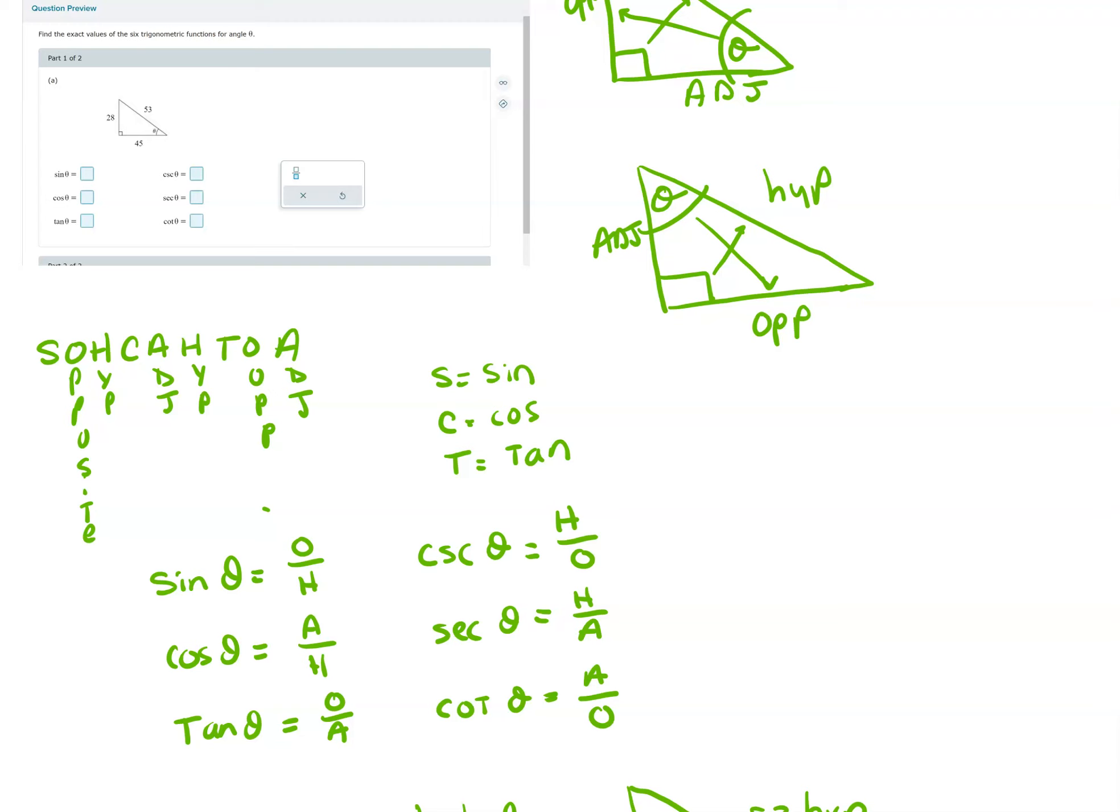And then these other trig functions, cosecant, secant, cotangent, are opposites of the way they're lined up. So notice that cosecant lines up with sine, secant lines up with cosine, cotangent lines up with tangent.